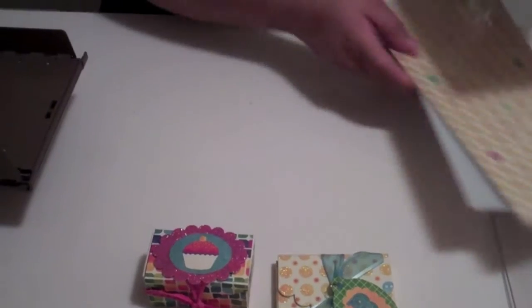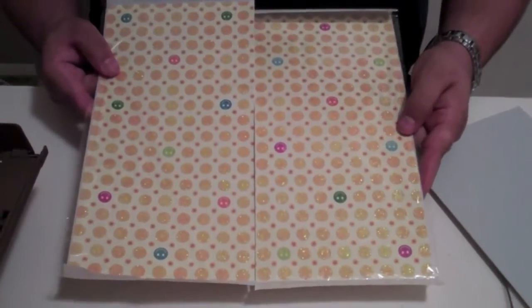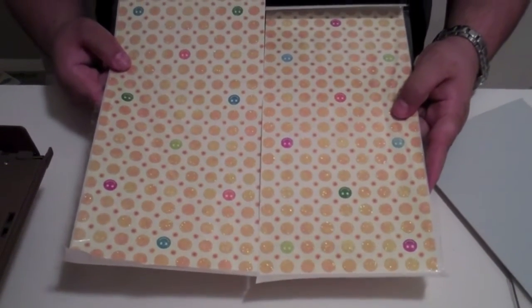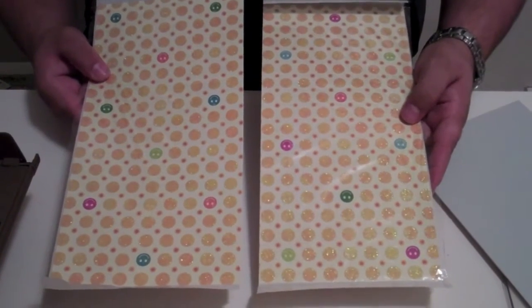The first part is, is what I did is I took a 12 by 12 sheet of paper, just like this. And I ran it through my Zyron Cratopia. And then what I did is, is I cut it into two 6 by 12 sheets.